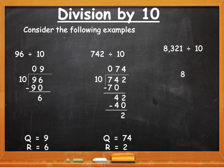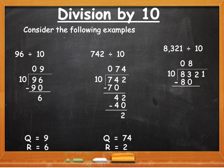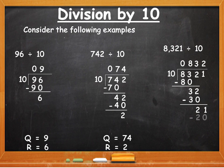8,321 is the dividend, a four-digit number. Divide 8321 by 10: write a 0, then divide 83 by 10. 10 will go 8 times; 10 eights are 80. Remainder 3, bring down 2. Divide 32 by 10 — it will go 3 times, minus 30, remainder is 2. Bring down 1. Divide 21 by 10 — 10 will go 2 times; 10 twos are 20, remainder 1. So the quotient is 832 and the remainder is 1.